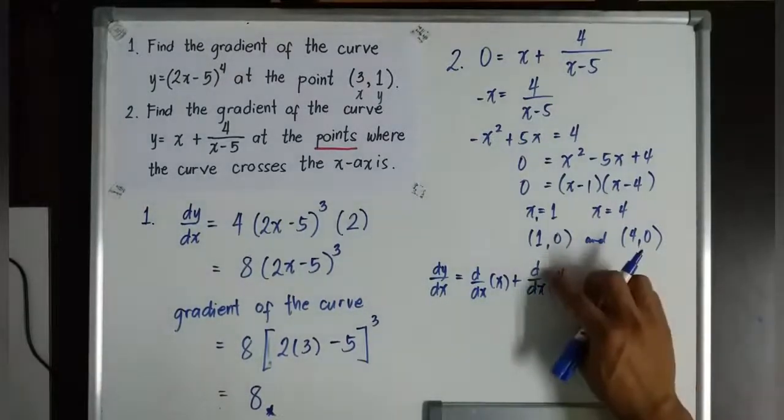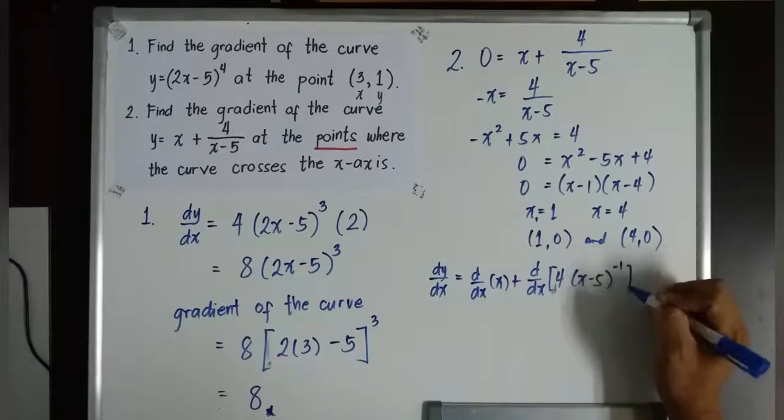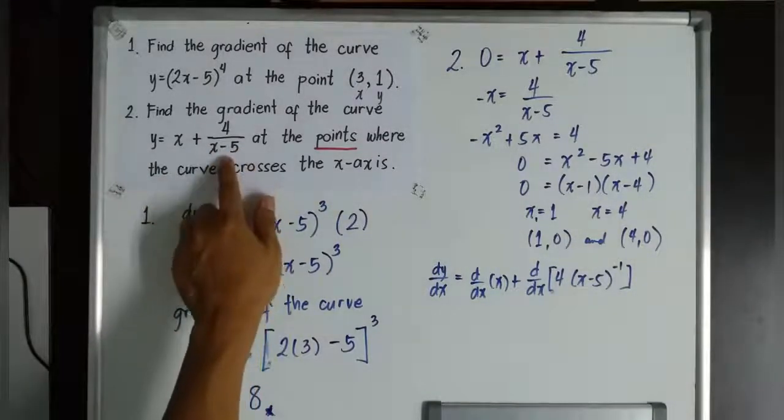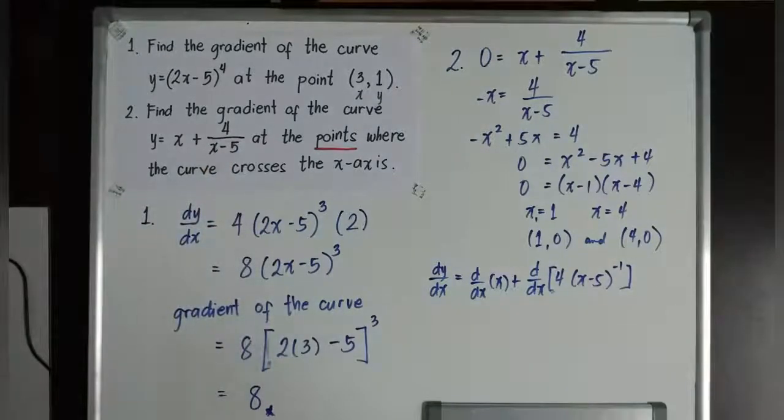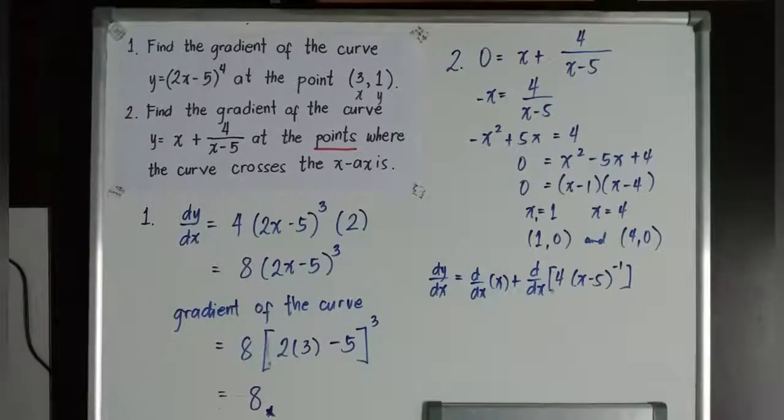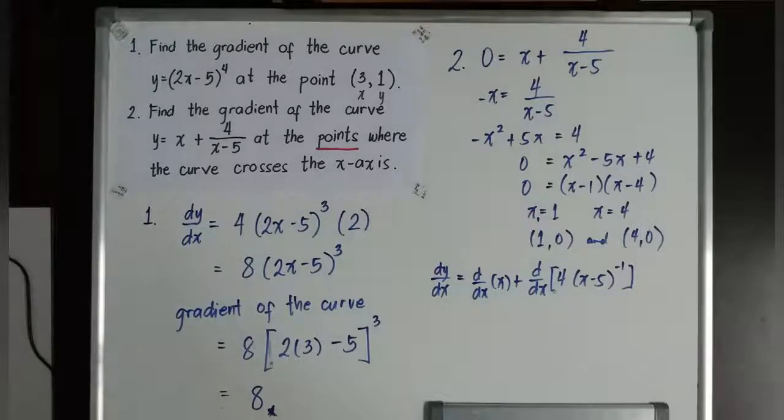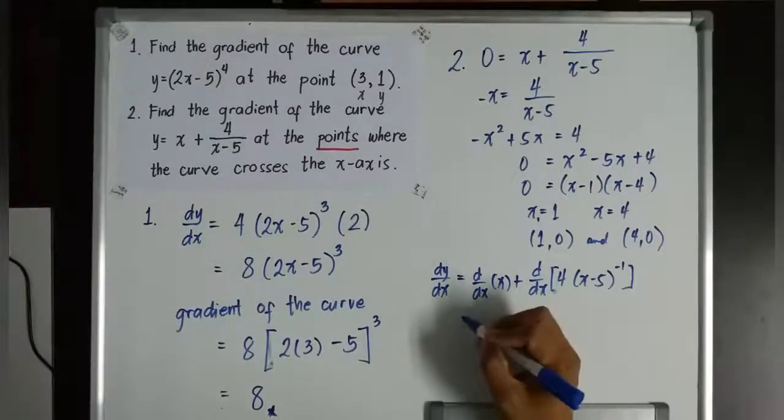4 times x minus 5 to the power of negative 1. Why did I write it like that? x minus 5 to the power of negative 1. Because basically, you don't have a rule yet. We haven't learned any rule yet that will give you something like this, unless you know already the quotient rule. But quotient rule will make it a little bit more complicated. And I advise that you don't use the quotient rule if you don't have a variable x on the numerator. If you only have a constant number on the numerator, then it's better for us to apply chain rule rather than quotient rule. So, what is the dy over dx of x? It is equivalent to 1.